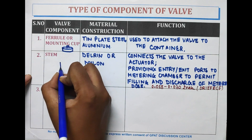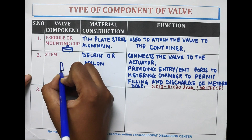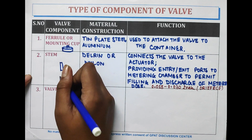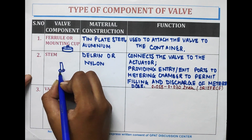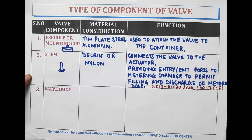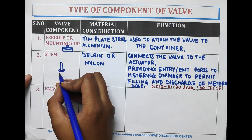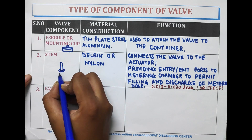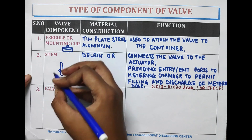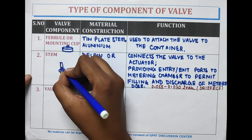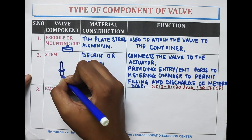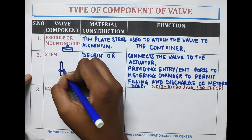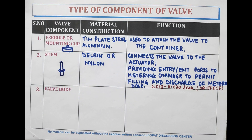The stem connects the valve to the actuator and provides exit as well as entry ports for the metering chamber, to permit the filling and discharge of the metered dose. Here, a pipe is present and a circular body type is attached to it.